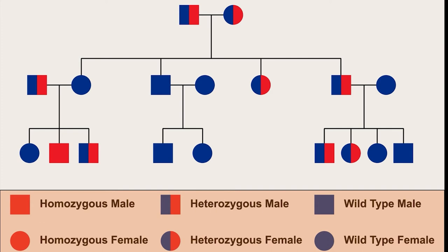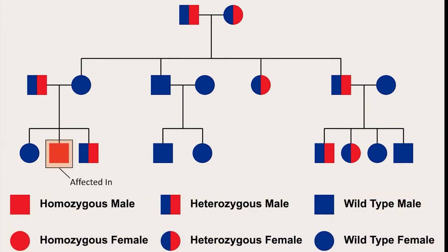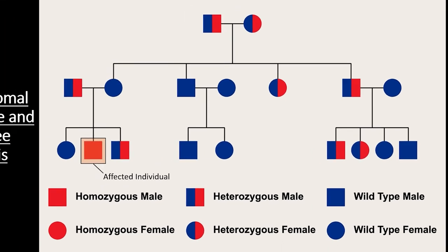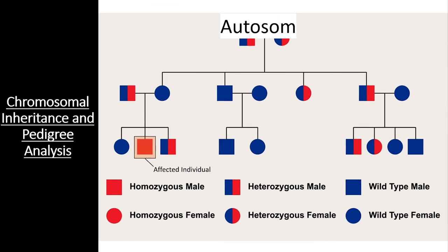A pedigree looking at a genetic disease will also show you the affected individuals — this is how you know what genotypes cause a particular disorder. In this case, we can easily see that the only affected individual is a homozygous recessive one. Since none of the heterozygotes are affected, we know this must be a recessive disorder. Since both males and females can be carriers, we also know this is an autosomal disorder. Thus, this particular pedigree shows an autosomal recessive disorder.